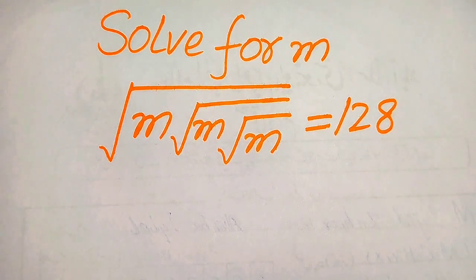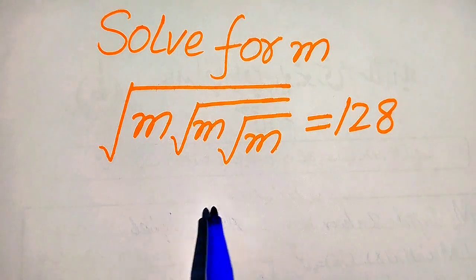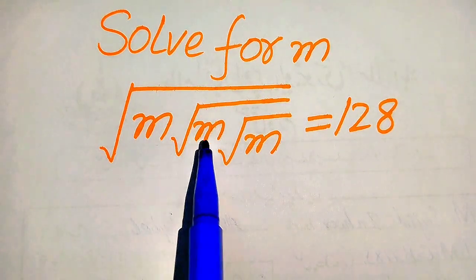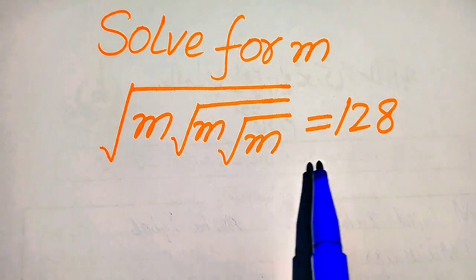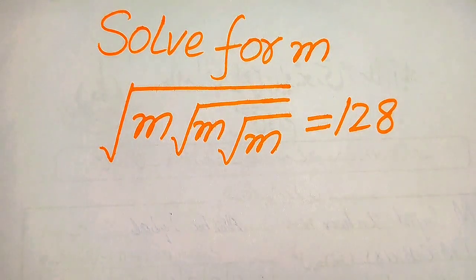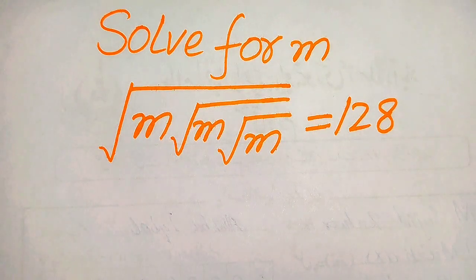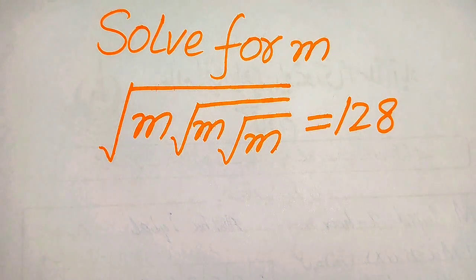Hello everyone. How to solve this problem: for the values of m, if we have square root of m inside the square root of m inside the square root of m, equals 128. We solve this problem for the values of m. I hope you like this method, but if you have any other method in mind, please don't hesitate to write it in the comment section.